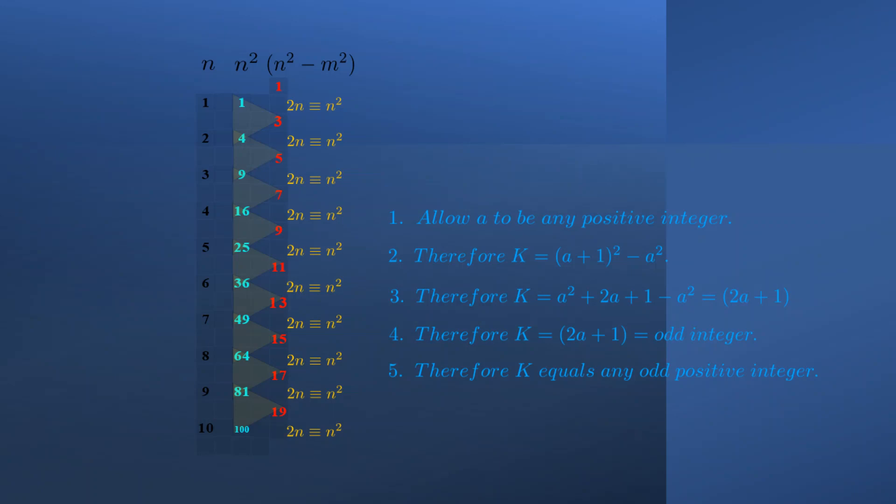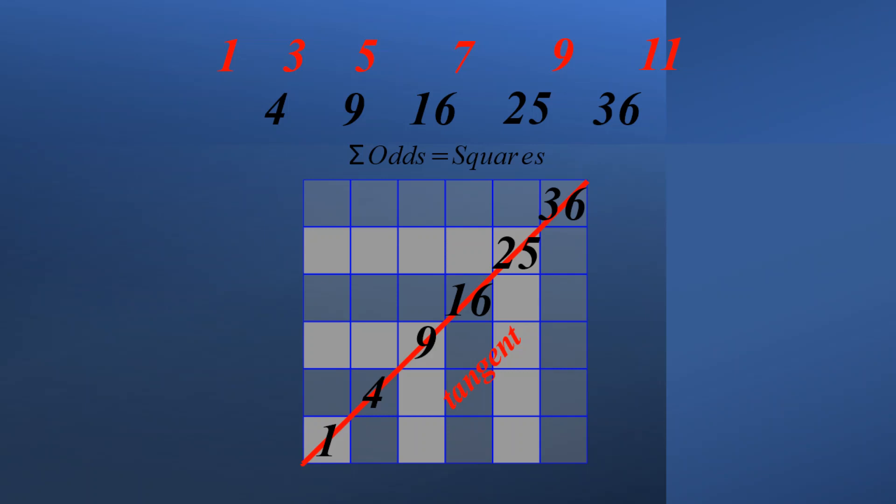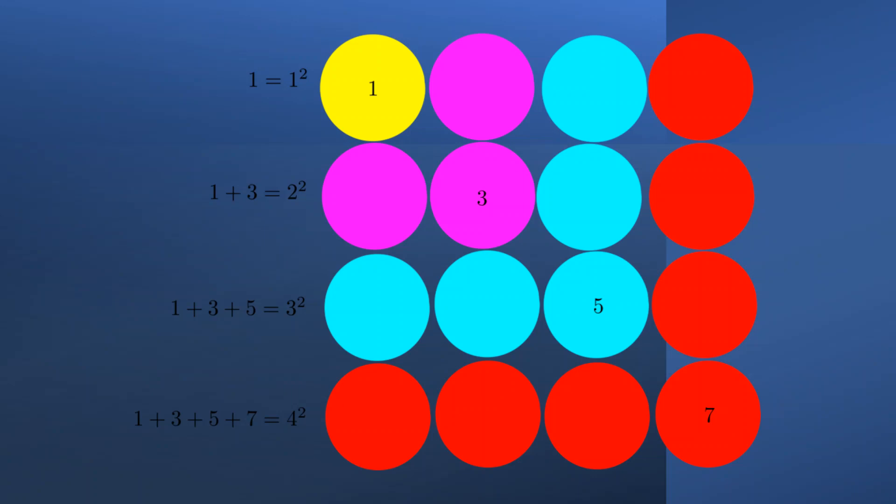Notice how each successive odd L sums together to form ever larger squares. And now you see, even though it sounded a bit crazy when I first mentioned it, every odd integer, including odd prime integers, are actually squares since they are all differences of two perfect squares. And so getting back to our number line, notice that every integer is separated by a gap of 2n, where n equals 1.